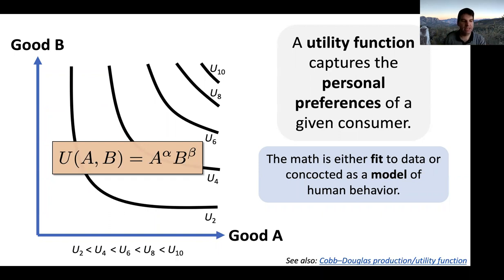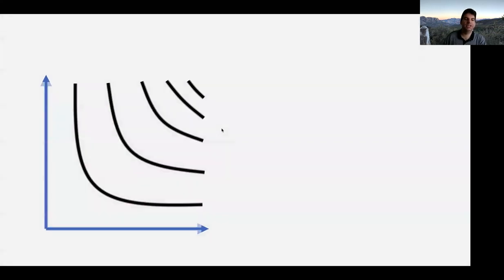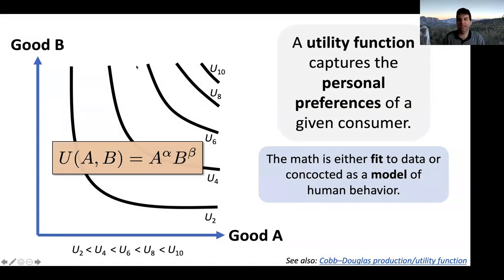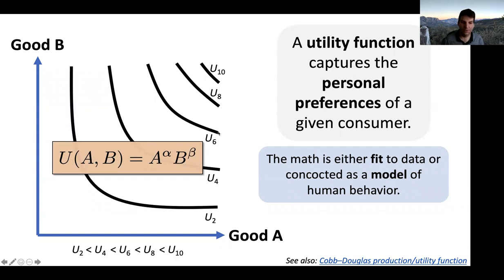We can represent utility curves mathematically. If you draw the level sets of this mathematical function, every A-B combination on the same line has the same utility. This utility quantifies how much joy I get from owning any amount of good A or good B. If you plug in numbers for A and B at one point, you get a value of U. Moving to another point on the same line, even though A and B differ, U stays the same—that's what puts them on the same indifference curve.